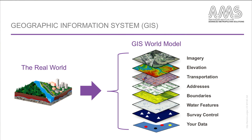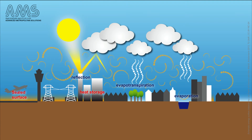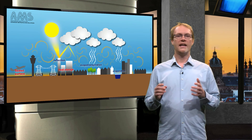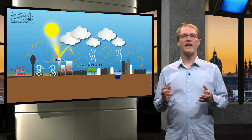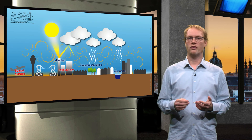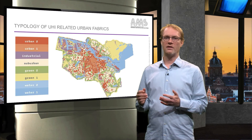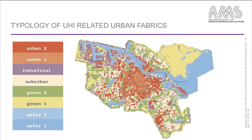A geographic information system is a system designed to capture, store, manipulate, analyze, manage, and present all types of spatial or geographical data. Why it heats up more in specific places than in others is related to how the urban form of a place influences the energy-surface balance. Simply put, areas with a high amount of sealed concrete surfaces and high building densities heat up more, whereas areas with a lot of green and water are cooler because of evapotranspiration. Using a GIS, we map the hotspots of Amsterdam in red, which are areas with a high level of imperviousness, little green and water and a low sky view factor.